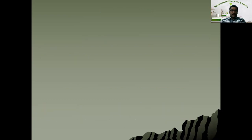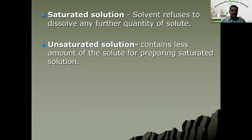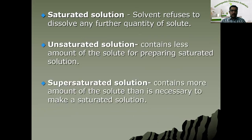Let us see the types of solutions. Depending upon the nature of solutions, they are classified into saturated solution, unsaturated solution, and supersaturated solutions. Saturated solution: if the solvent refuses to dissolve any further quantity of solute, then it is known as a saturated solution. When a solute is easily soluble in a solvent, it will dissolve, and at a particular point there is no more space for further solute to dissolve. That particular solution is known as a saturated solution.